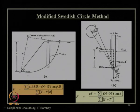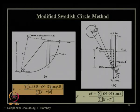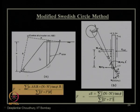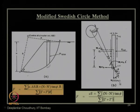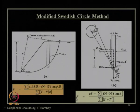Now let us move to the modified Swedish circle method. The Swedish circle method uses a circular arc failure surface and a typical factor of safety expression for vertical slices. In the modified analysis, seismic acceleration is introduced: Wi·αH for horizontal inertia force and αV for the vertical component of each slice, corresponding to KH and KV, to obtain the modified factor of safety.